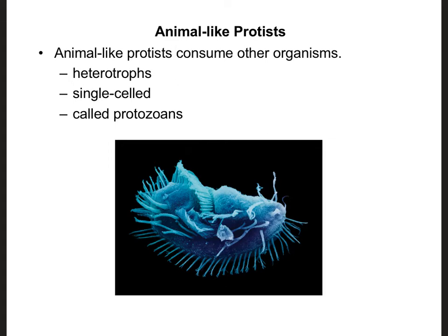We're going to start by looking at animal-like protists. These guys are going to be heterotrophs, and that's why they're similar to animals. The difference is that in order to be in Kingdom Animalia, you have to be multicellular. So these are all heterotrophic organisms that are single-celled. The other word we use for animal-like protists is protozoans — proto means first or primitive, and zo refers to animals, like a zoo. So a protozoan is just another word for an animal-like protist.